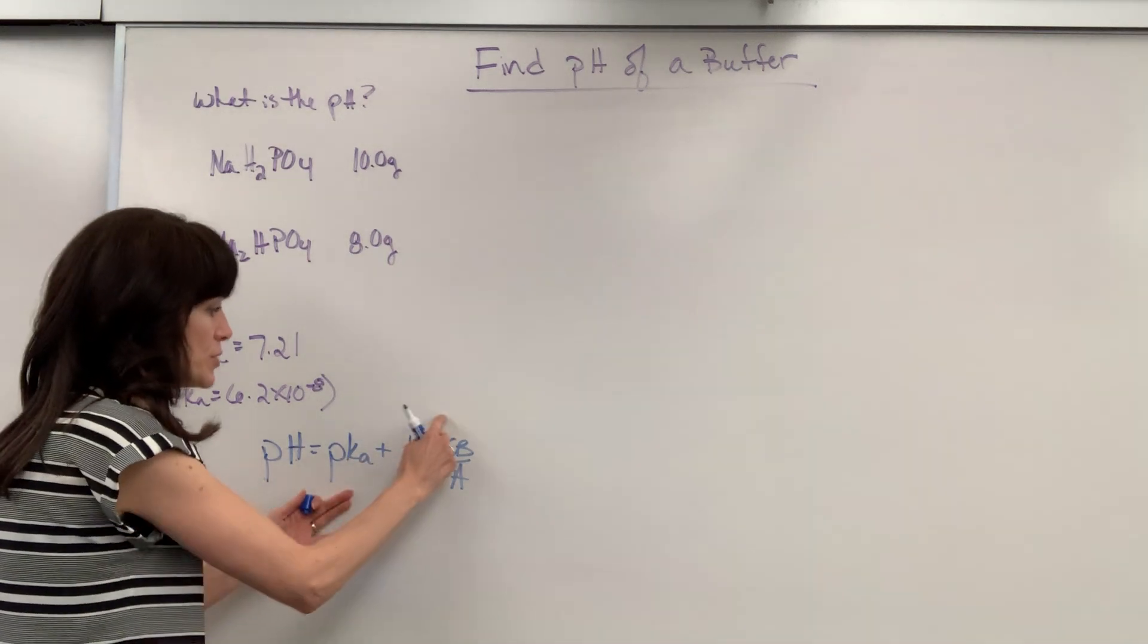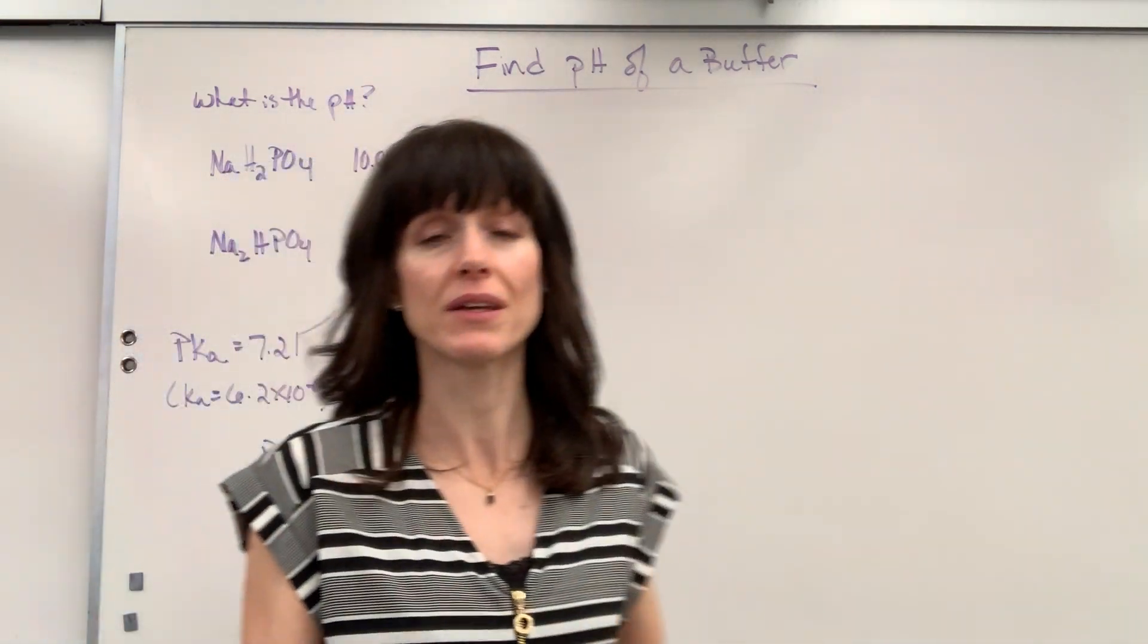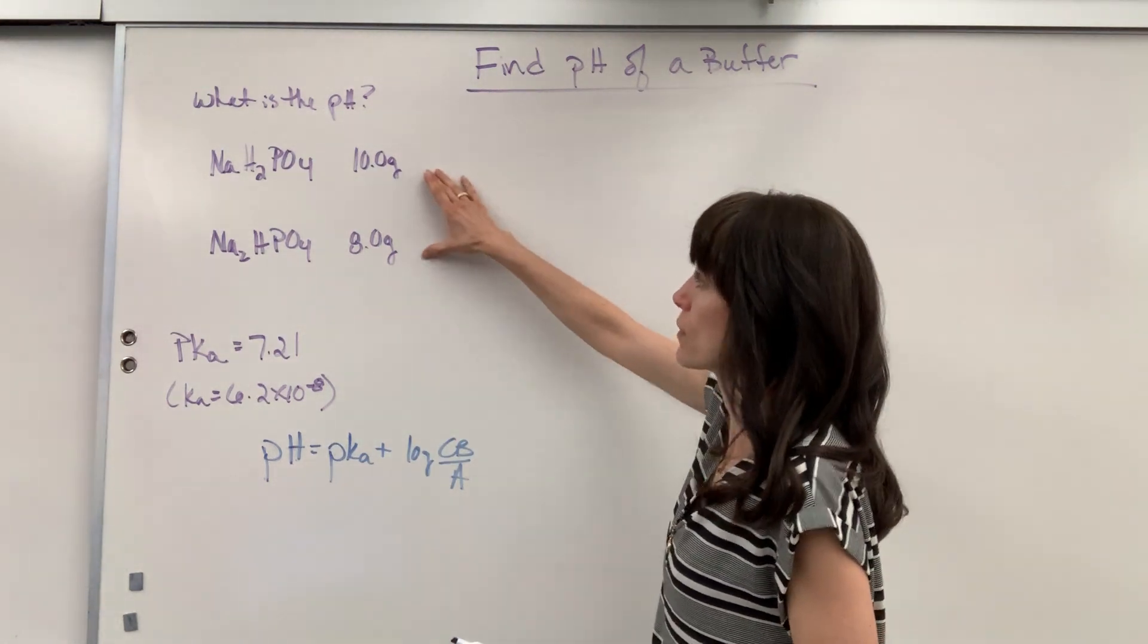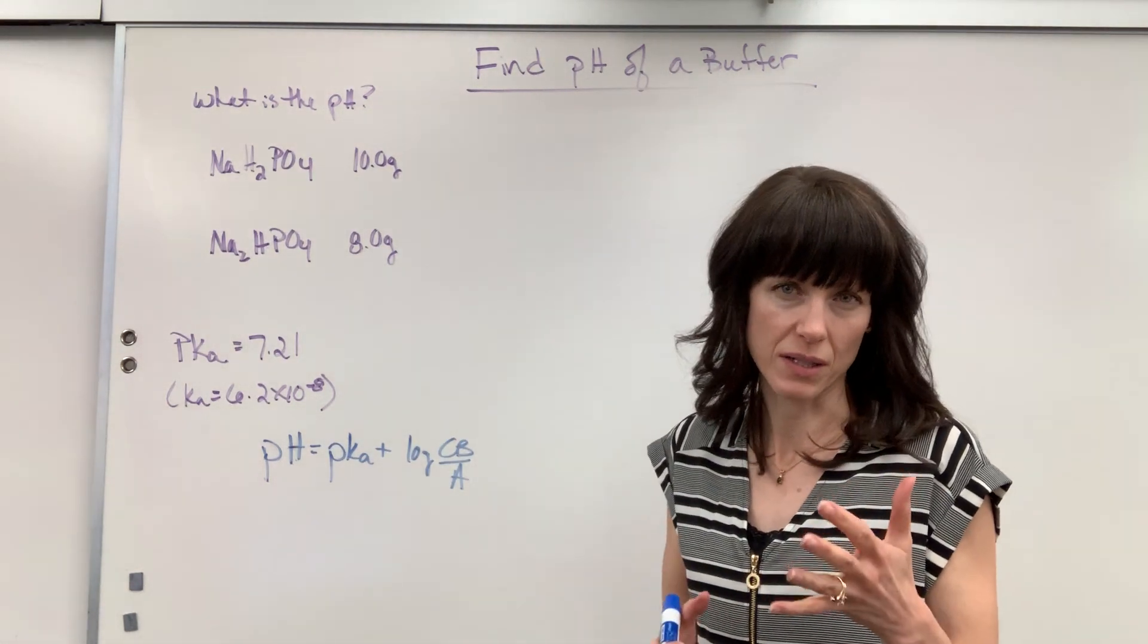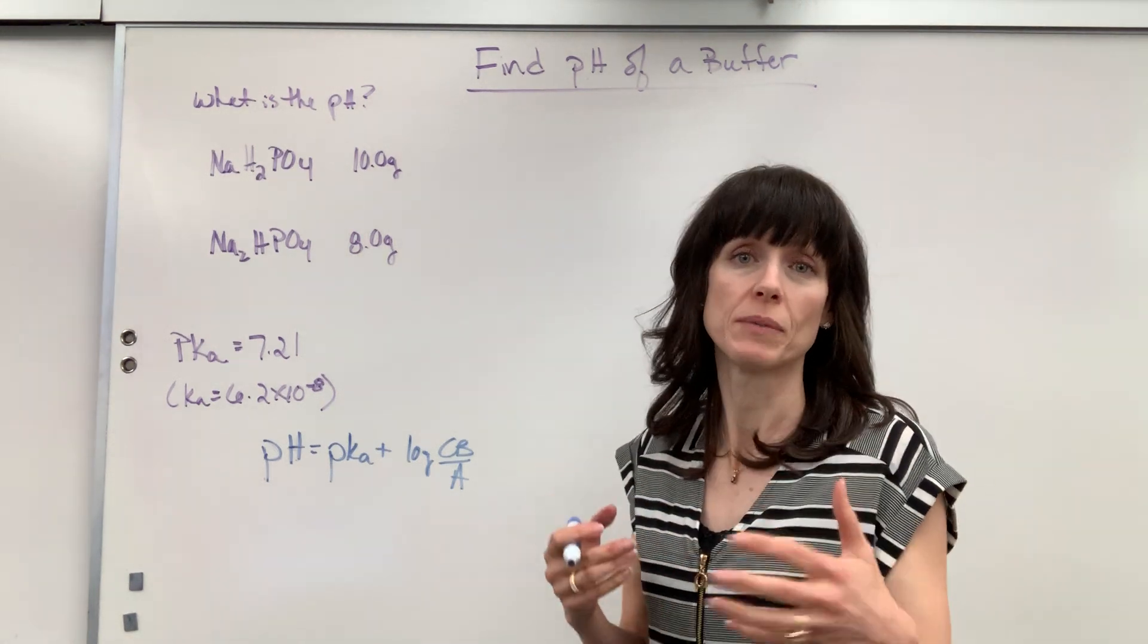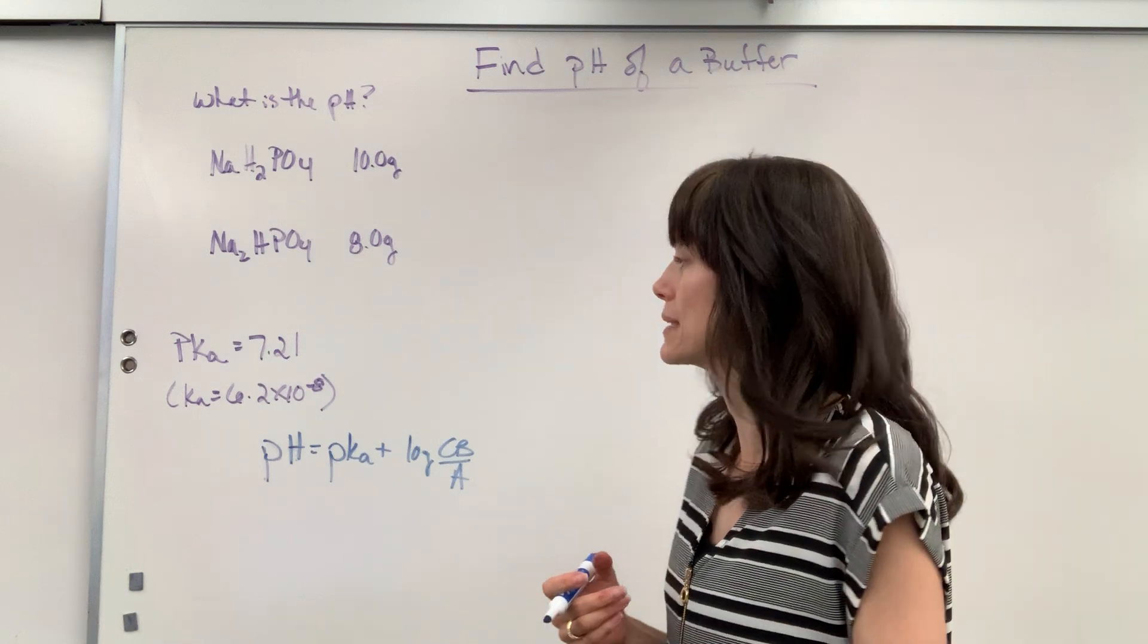So I just plug in 1, 2, 3 pieces of information and we can find the pH of this buffer. Now I'm given grams and I think this is actually the hardest way to do it. That's why I'm doing this problem. You could be given problems that are easier and I'll show you an example of that.